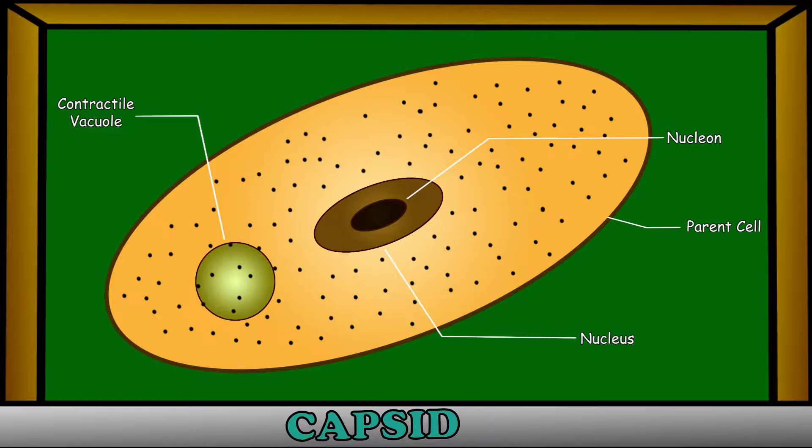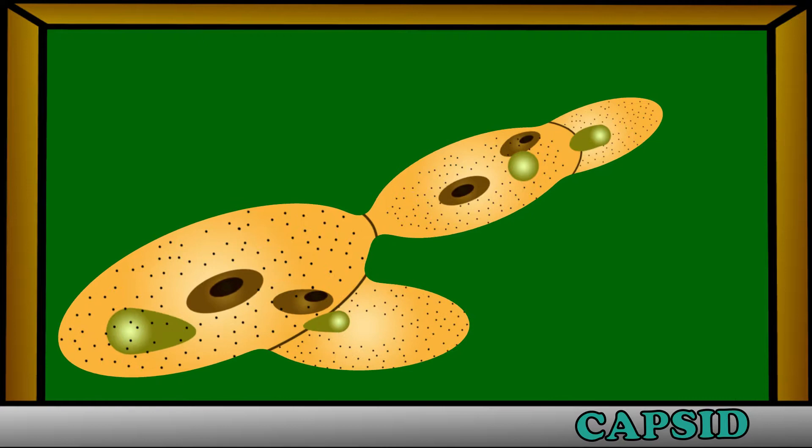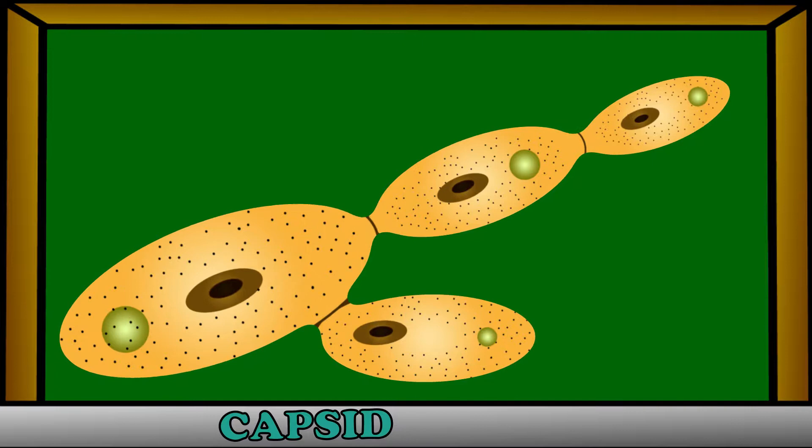In yeast, at suitable conditions the formation of buds takes place, and then the parent nucleus is divided into two nuclei, from which one gets moved into the bud. Finally, the bud separates from the parent cell, which is known as daughter yeast.